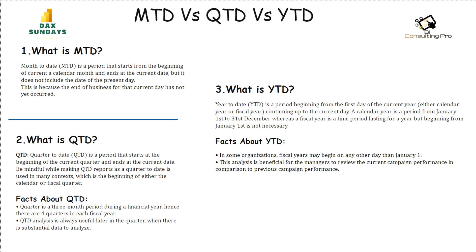An MTD report provides information regarding your campaign for that particular period of time. The report helps in comparing the campaign's current period performance to that of past periods. MTD can help you identify trends and predict future behavior. There are different metrics and key performance indexes to measure and compare, so plotting and reviewing data on the MTD scale can help you identify problems with real-time data.